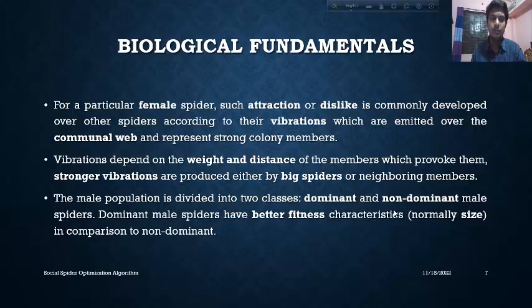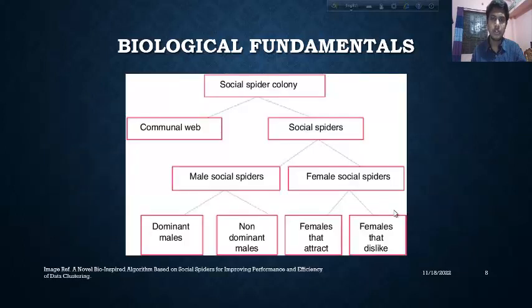For example, strong vibrations can be produced by the big spiders or the neighbour members. The male population is divided into two classes: dominant and non-dominant. The dominant spiders have better fitness, and we measure them according to size in comparison to the non-dominant. So let's sum up these parts.